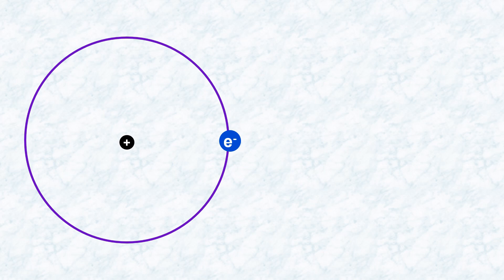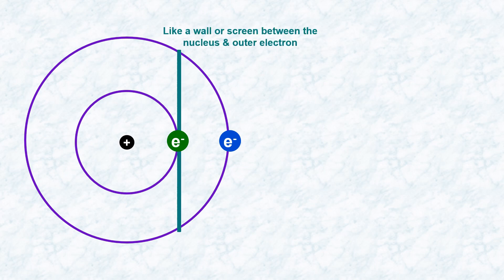Now, let us introduce an inner electron between the nucleus and the outer electron. What do you expect to happen now? It becomes evident that the force of attraction between the nucleus and the outer electron decreases as the inner electron acts as a wall or a screen between them. In a way, the inner electrons absorb a portion of the nuclear force.